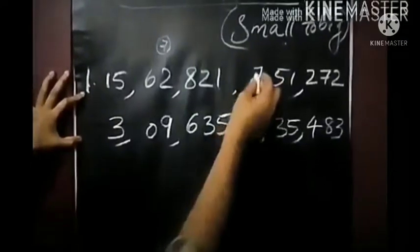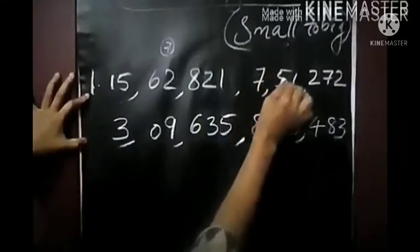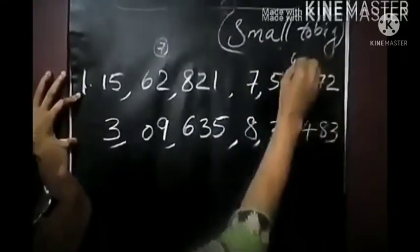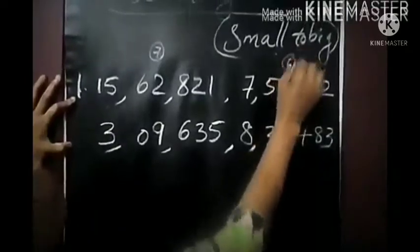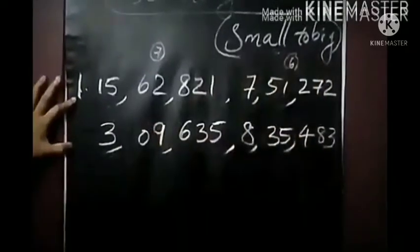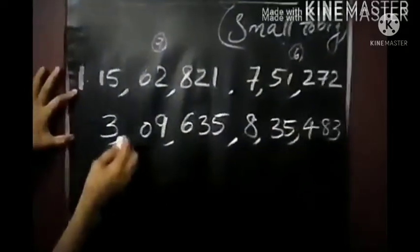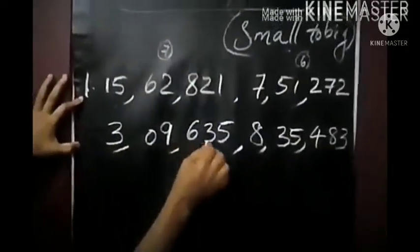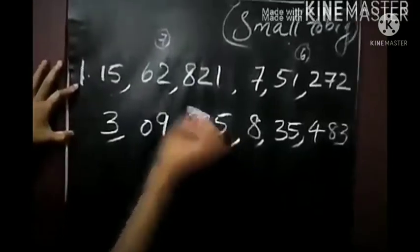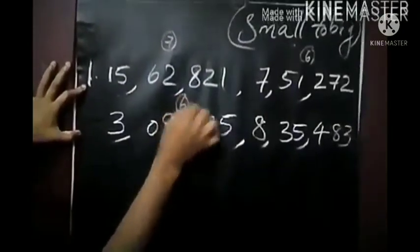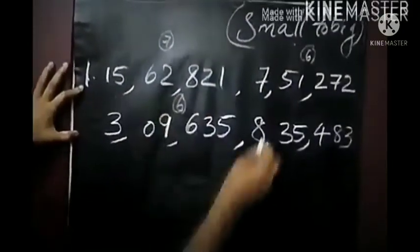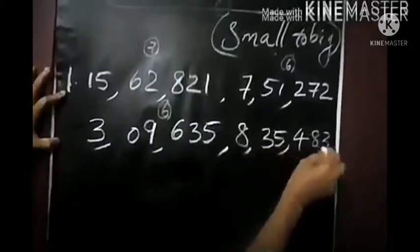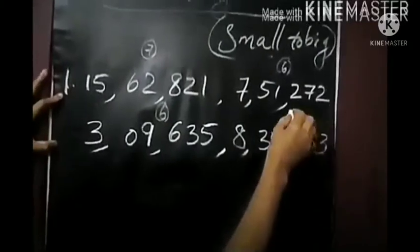The second number has 6 digits. Then the third number also has 6 digits. And the fourth number also has 6 digits.